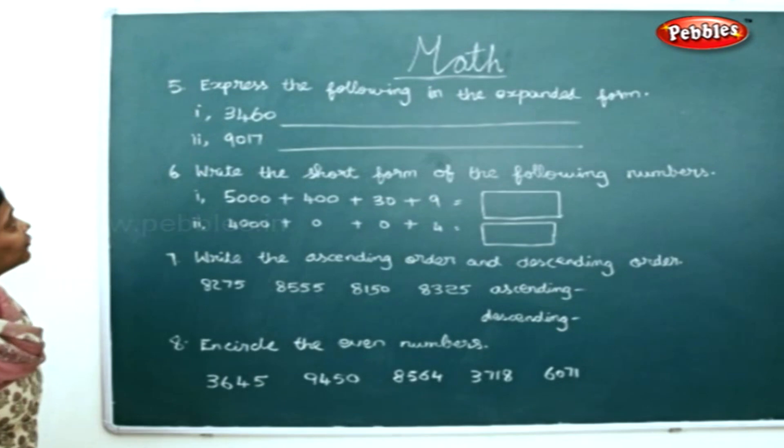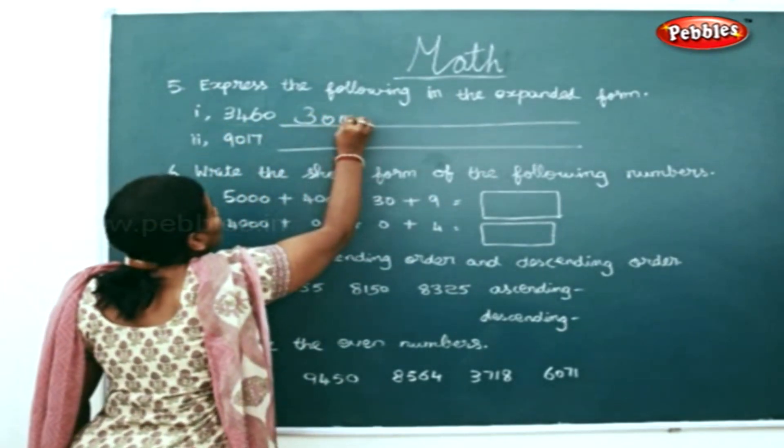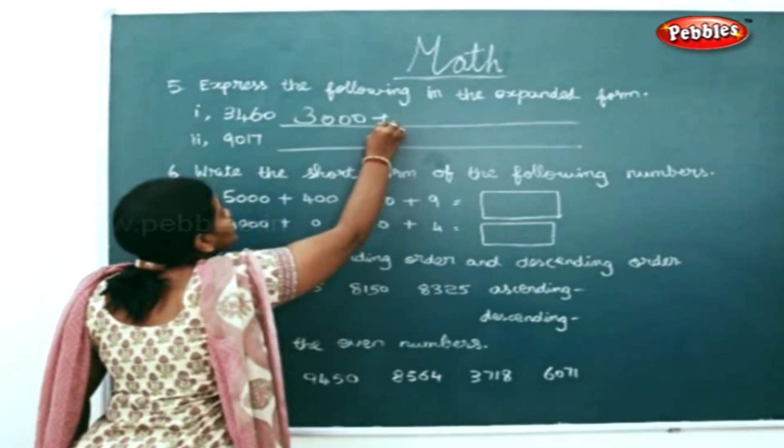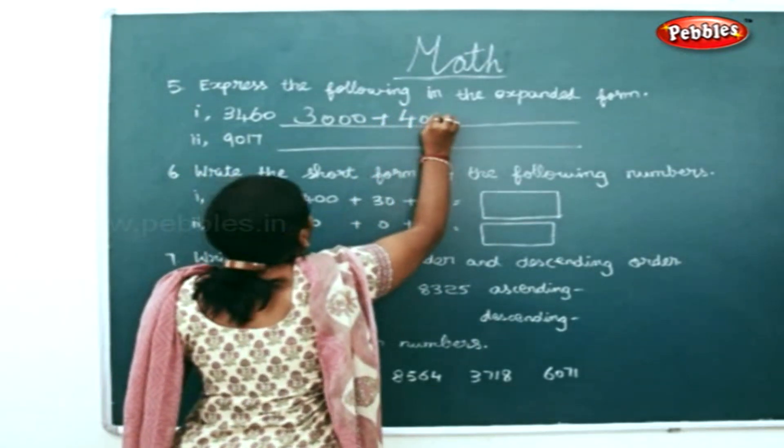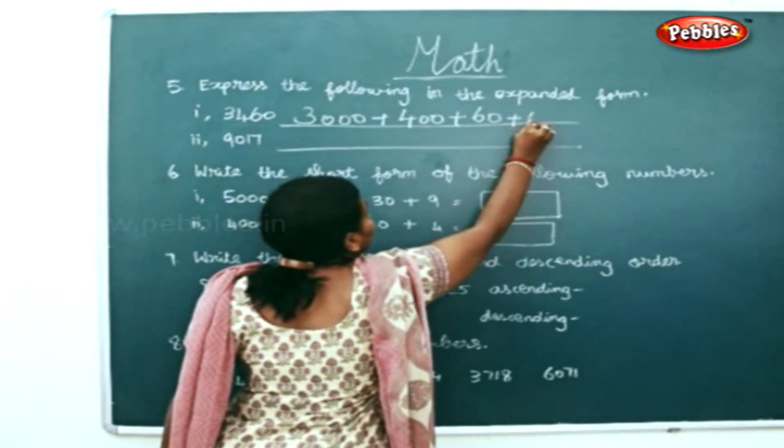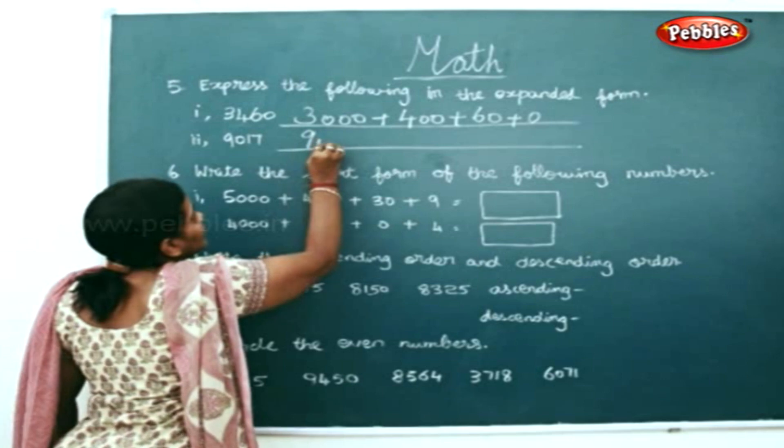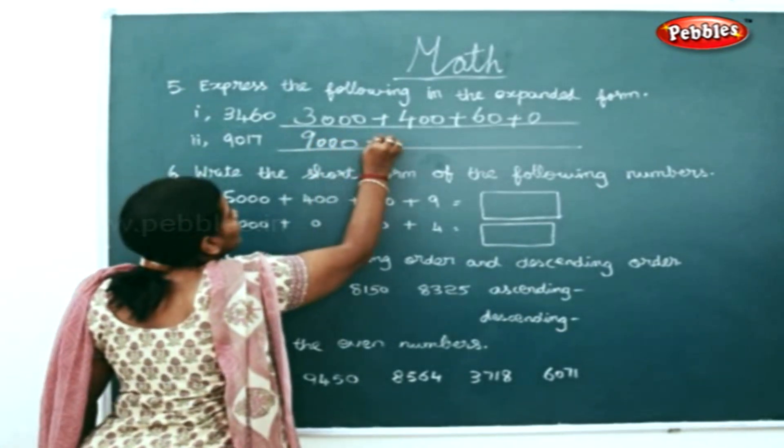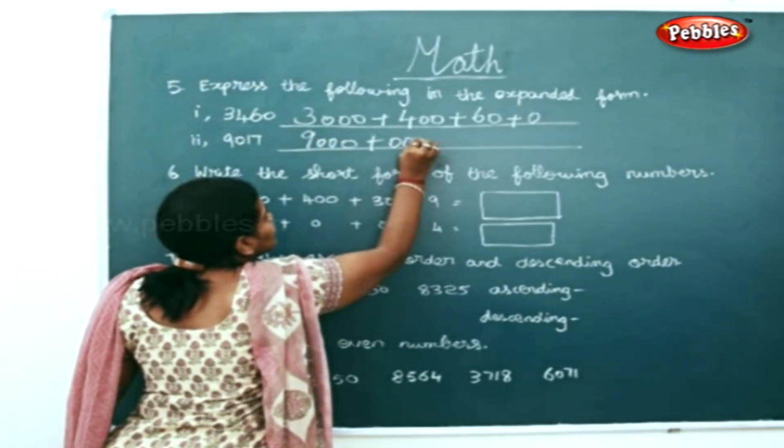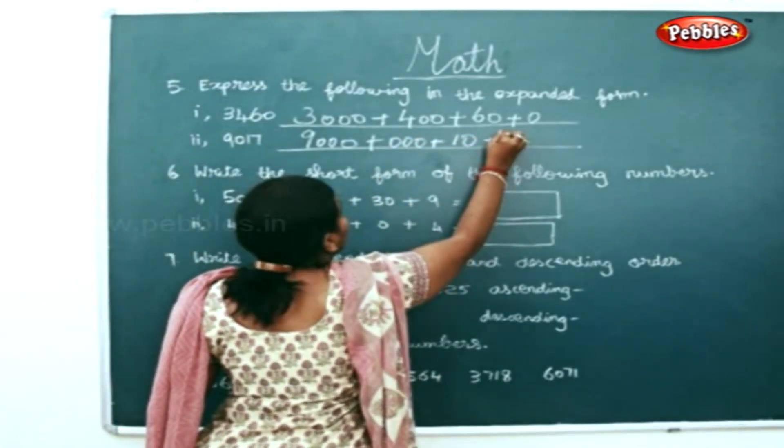This can be expanded as 3000 plus 400 plus 60 plus 5. This can be expanded as 9000 plus 0 plus 10 plus 7.